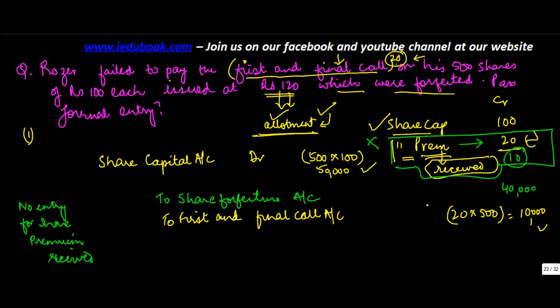In that case, whatever premium is not received is also debited, because originally when you would have considered the share premium, you would have credited it. So you debit the share premium account by 10 into 500, that's 5,000, and the credit to the share forfeiture account will be 45,000.